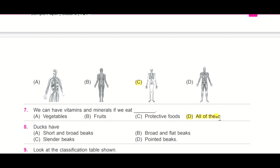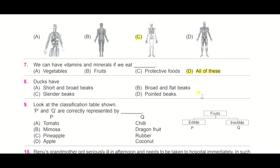Question number eight: ducks have option A, short and broad beaks; B, broad and flat beaks; C, slender beaks; and D, pointed beaks. What kind of beaks do ducks have?